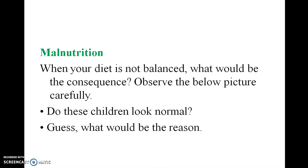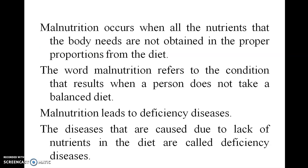Malnutrition occurs when all the nutrients the body needs are not obtained in proper proportions. For example, taking only Vitamin C and neglecting other nutrients will lead to malnutrition. Malnutrition leads to deficiency diseases. Diseases caused due to the lack of a nutrient in the diet are called deficiency diseases.